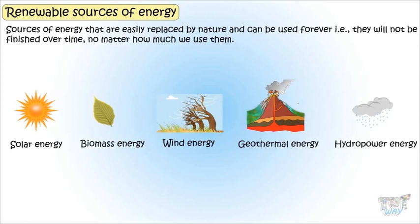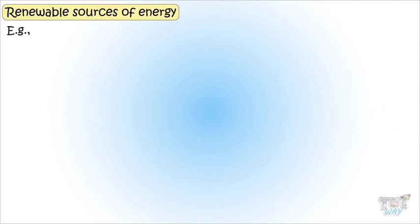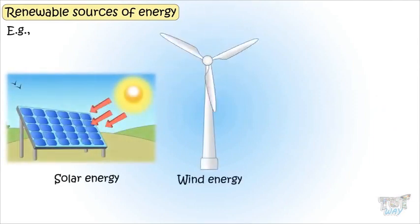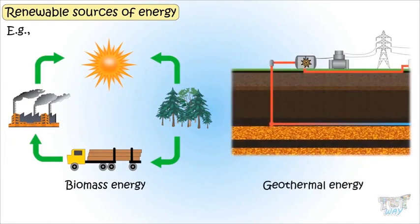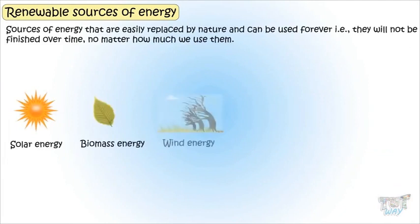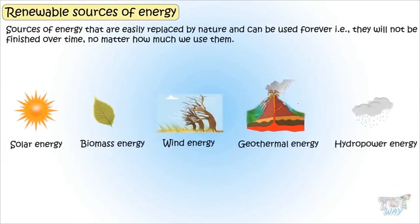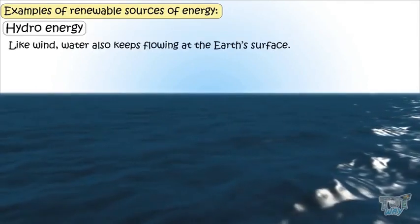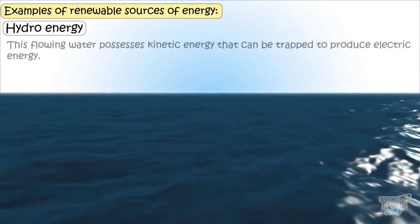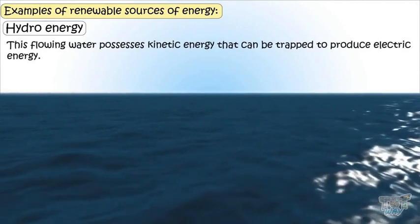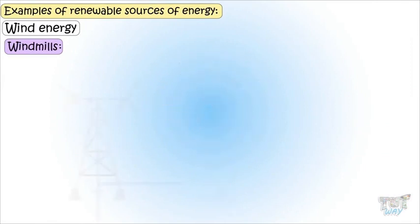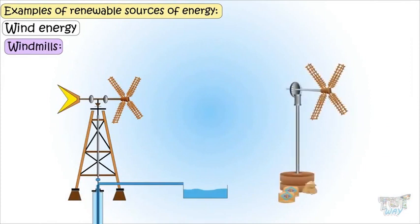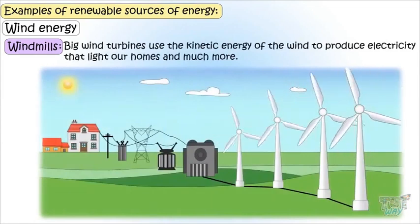The energy source which does not have an end is known as the renewable source of energy. The sun's energy is used in solar panels to convert into electricity and in solar cookers. After all that use, every day the sun still comes with the same amount of heat and light. So those sources which give us energy without an end are the renewable sources of energy. Similarly, water and wind are also renewable sources of energy. Sun, wind, and water are the renewable sources of energy.